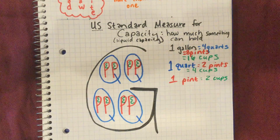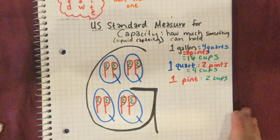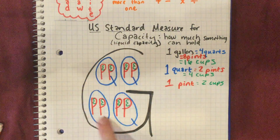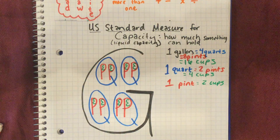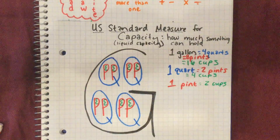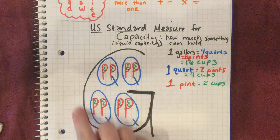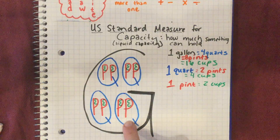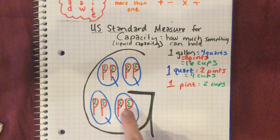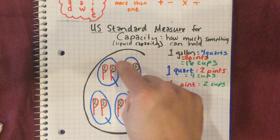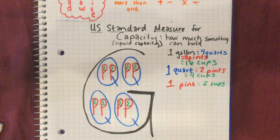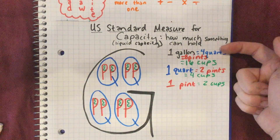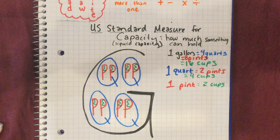If you haven't already, grab something to write with and something to write on. Record our U.S. standard measure for liquid capacity starting with the gallon: one gallon is four quarts, eight pints, sixteen cups. I'd also like for you to draw out this chart as well.